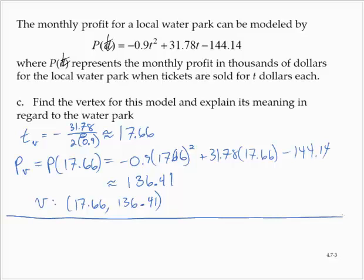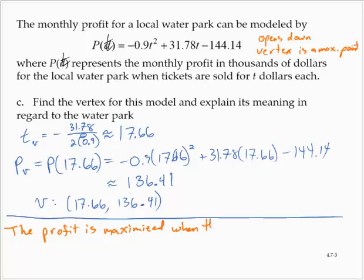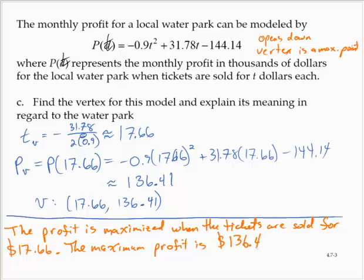Now, interpretation. This profit function is quadratic and opens down. Since it opens down, the vertex is a maximum. So what does it tell us? The profit is maximized when the tickets are sold for $17.66. The maximum profit is $136.41 thousand, or $136,410.